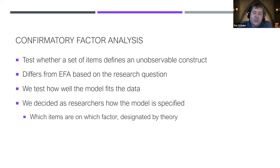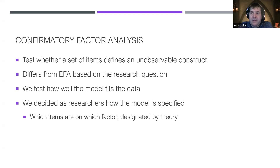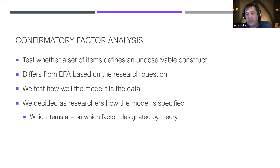With confirmatory factor analysis, we have a set of items that are all measuring different facets of a construct we can't directly measure — we're just trying to get a good proxy. This differs from EFA based on research question. The idea is we have this structure in mind — we believe depression is a single unidimensional factor. When I say unidimensional, it's not like subscales; it's all measuring the same part of depression. We're really testing how well our theoretical model fits the data, and we need to determine as researchers how we create that model.